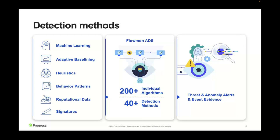We also use a combination of detection methods and do not only rely on mathematical and statistical models. We incorporate machine learning and adaptive baselining, which literally means creating baselines of different types of traffic in the network and reporting on deviations. We also use behavior patterns — known characteristics of bad actors — and we incorporate reputational data and some signatures. While we do not depend on signatures, we find them very useful as enrichment of context. All these methods come in a bundle of over 200 individual algorithms that look for different indicators of compromise in different stages of network attack, providing early detection and response.